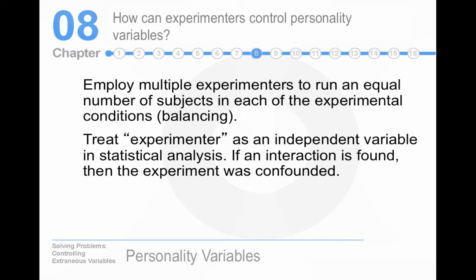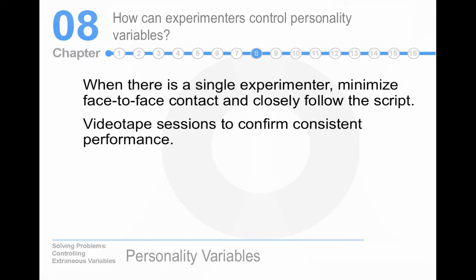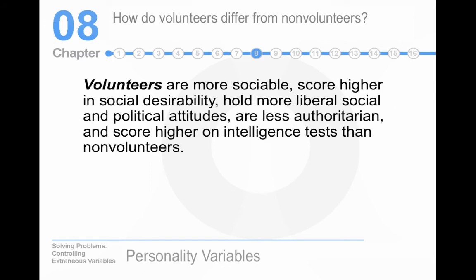You want your findings to be robust, meaning they hold up across researchers, universities, and ideally species. Constancy of conditions controls extraneous variables you haven't even identified. Regarding volunteers: people who volunteer to be in research are different from the general population — this is an external validity issue. In university research, it's usually college students who volunteer, and that's a confound, because if you're in college you tend to be smarter, better educated, and more cooperative than people in the general population.